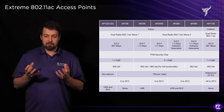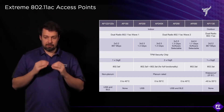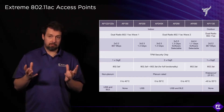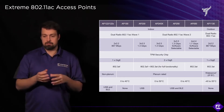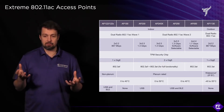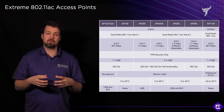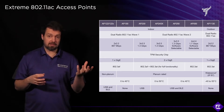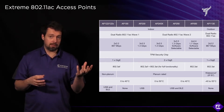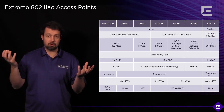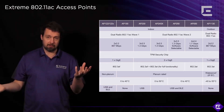The AP250 is the first access point with software selectable radios, or what we call dual 5 GHz radios, which means one radio is a fixed 5 GHz radio and one of the radios can be either 2.4 or 5 GHz.